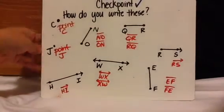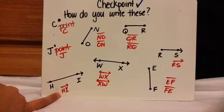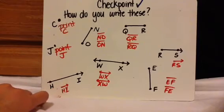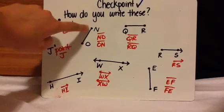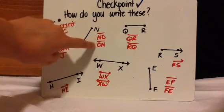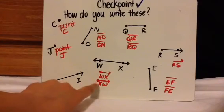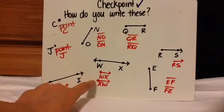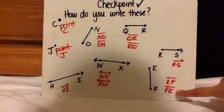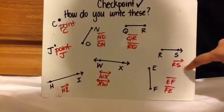Here are the answers. This is point C, and this is point J. This one is a ray — the starting point is H, the forever part is I, so you write ray HI with the arrow going that way. This one is a line segment, so you can go either direction: line segment NO with just a line on top and no arrows, or line segment ON. This one is a line — it goes forever because of the two arrows — so it can be line WX or line XW, and notice these have arrows on top. This one is a line segment: line segment EF or line segment FE. And the last one is a ray — starting point is R, forever part is S, so it's ray RS.